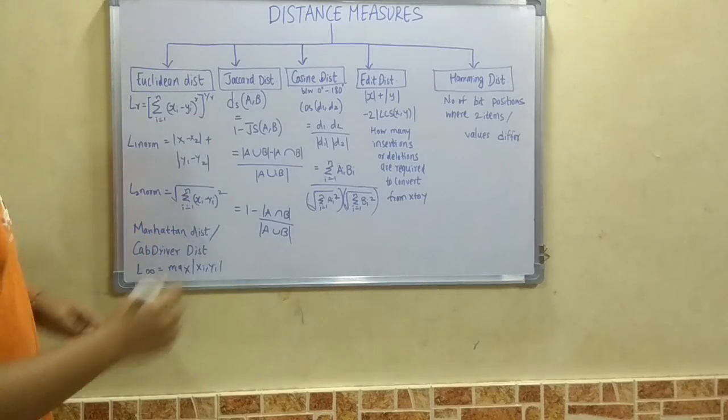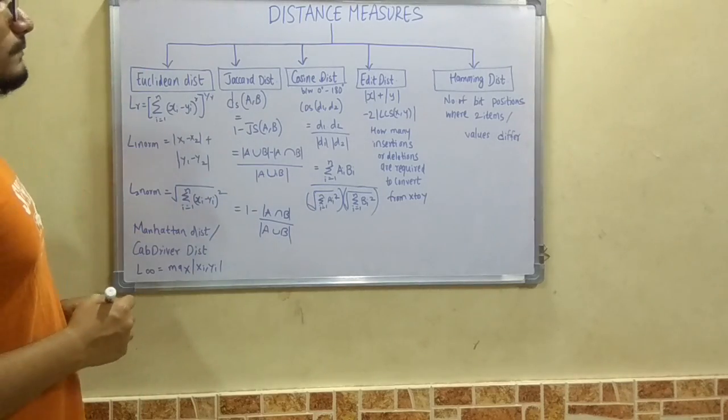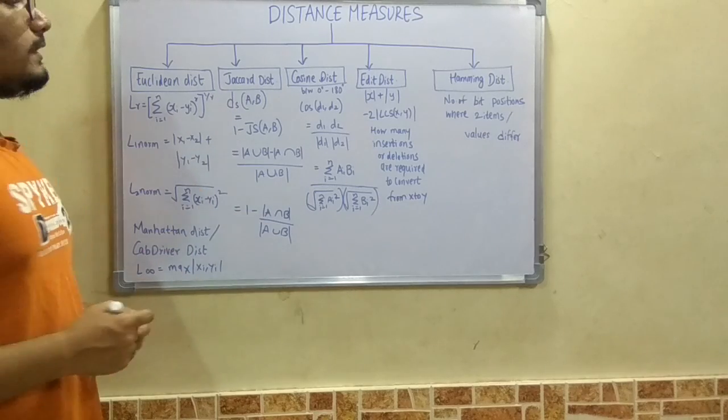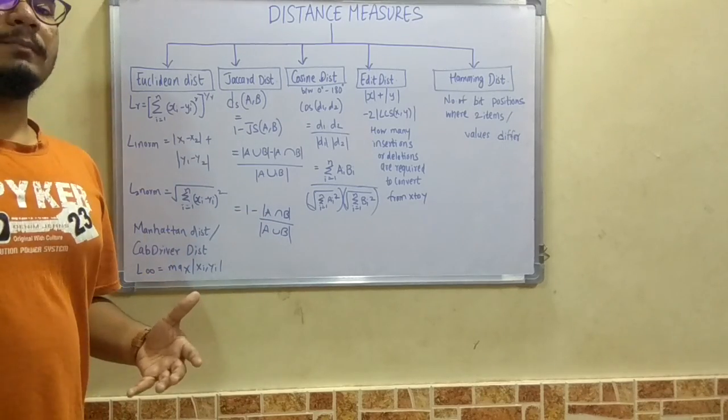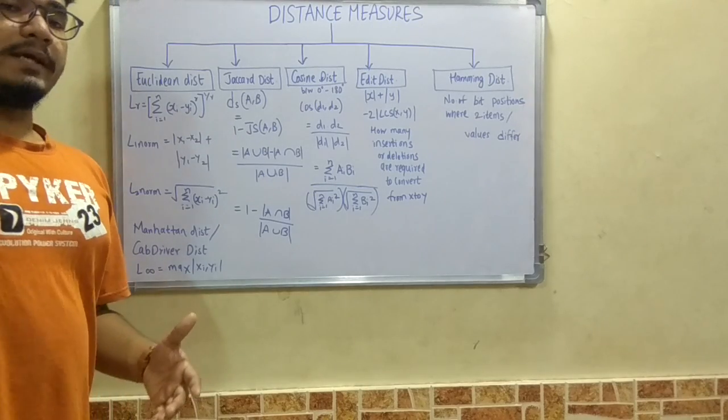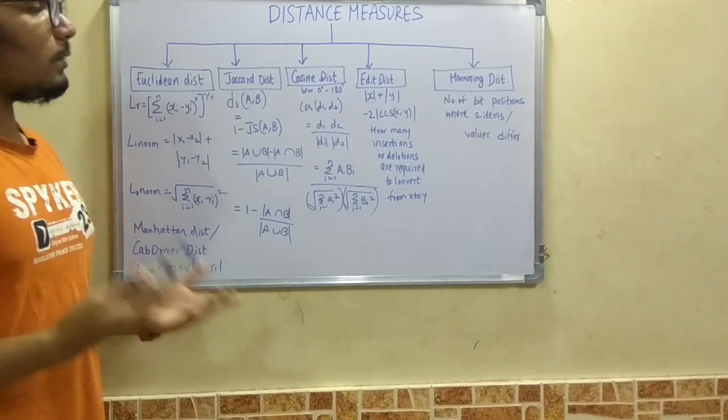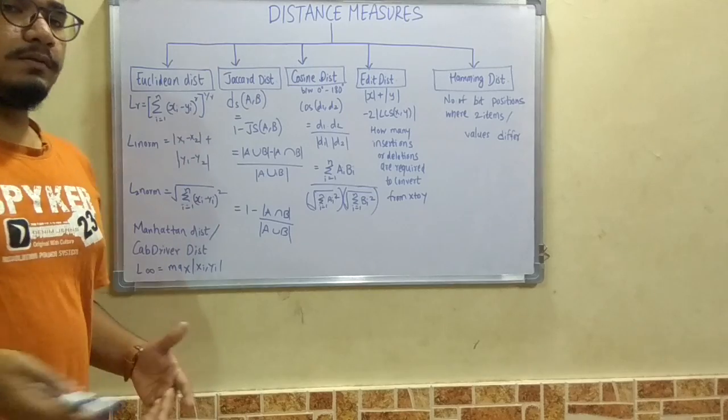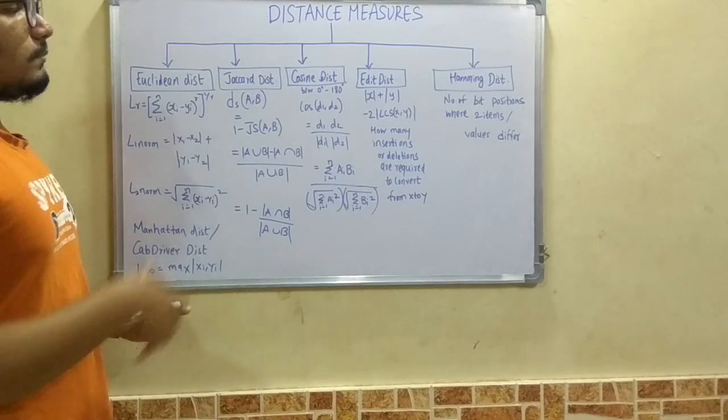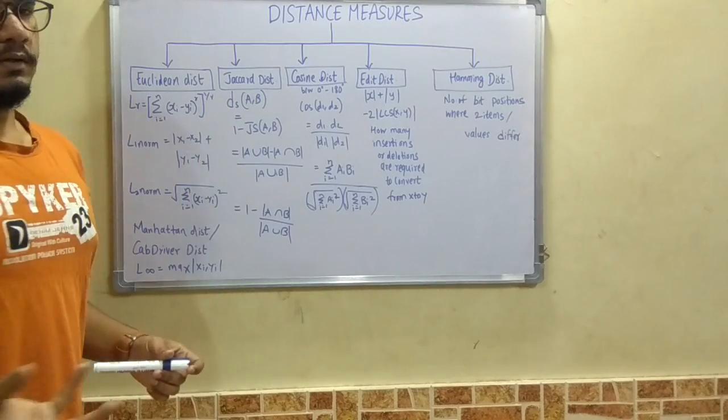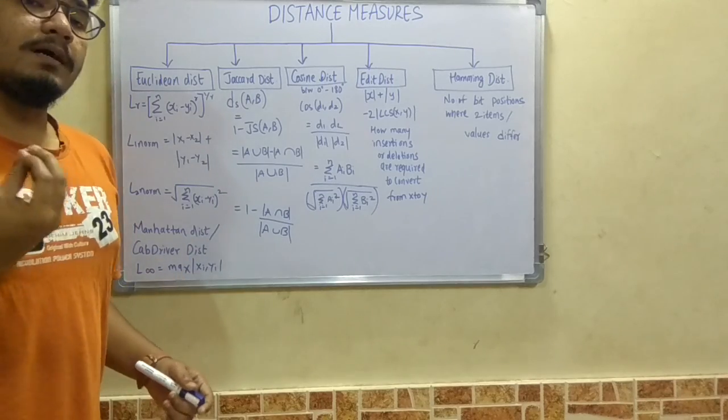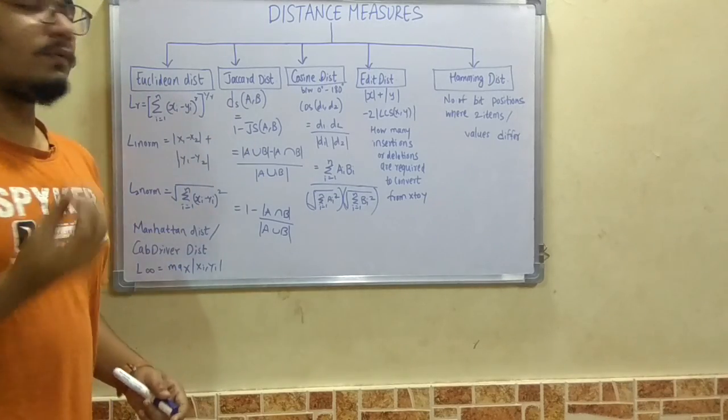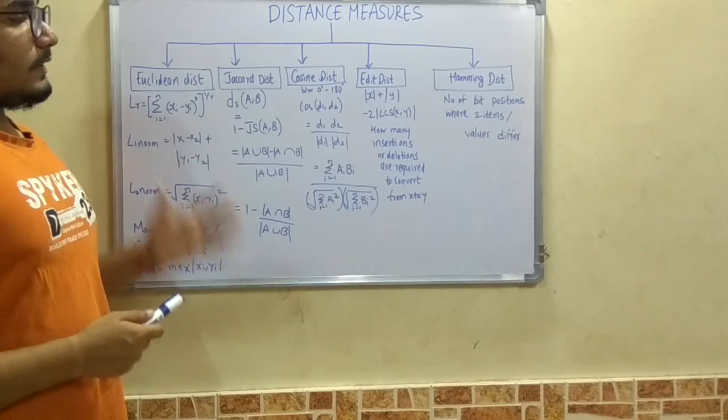Next we move on to cosine distance. Cosine distance is a distance measure from trigonometry. Likewise, we have sine distance, cosine, tangent, cotangent, secant distance. The most common measure is cosine distance, which measures between 0 to 180 degrees.